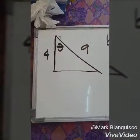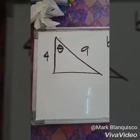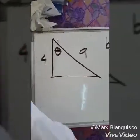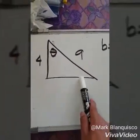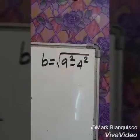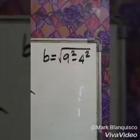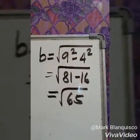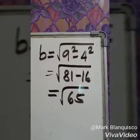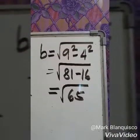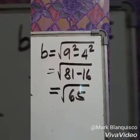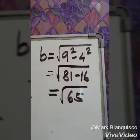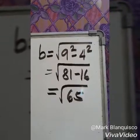Example number 2. We have the adjacent side which is equal to 4, and the hypotenuse which is equal to 9. We are going to solve for the opposite side. We have b equal to the square root of 9 squared minus 4 squared. 9 squared is equal to 81, and 4 squared is equal to 16. 81 minus 16 is equal to 65. Since 65 is not a perfect square number, the square root of 65 is the length of the opposite side.